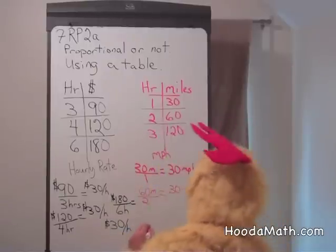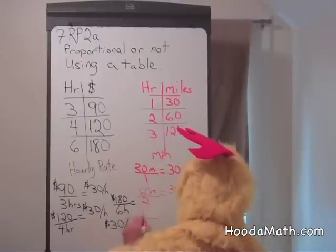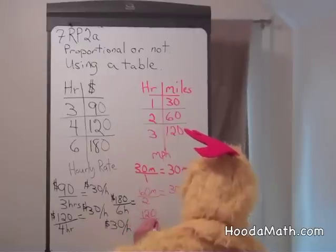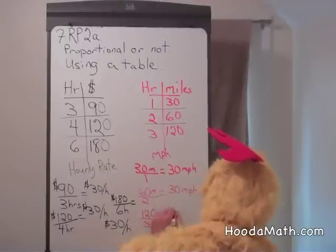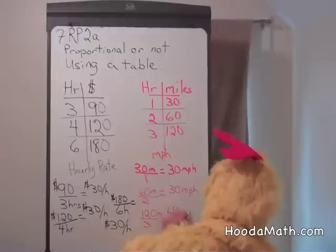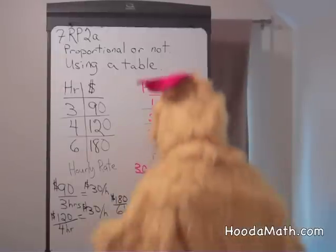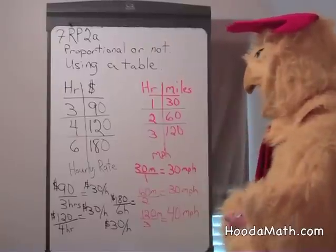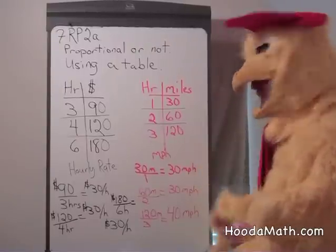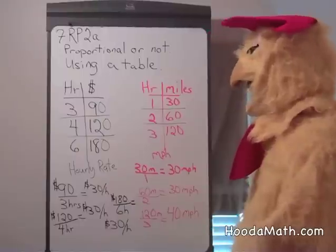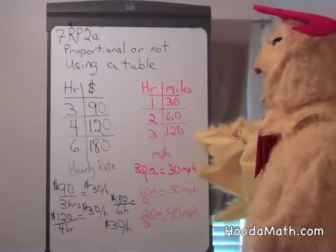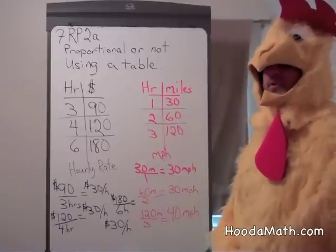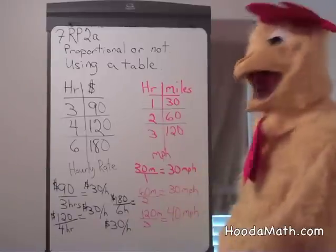And then finally, after 3 hours, she traveled 120 miles. But wait — she was traveling 40 miles per hour as her average speed after 3 hours. So the unit rates are different. Some of them are the same, but they all have to be the same for it to be proportional. So this table's results are not proportional because the unit rates are different.